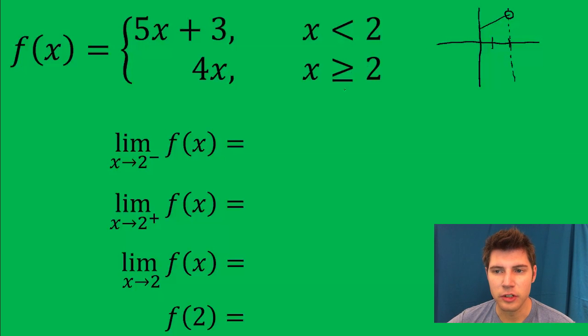Then when it's greater than 2, it's 4x. So we'll have that start here with it included, and then going up. So this is our two functions for our piecewise. This actually goes on forever in this direction.